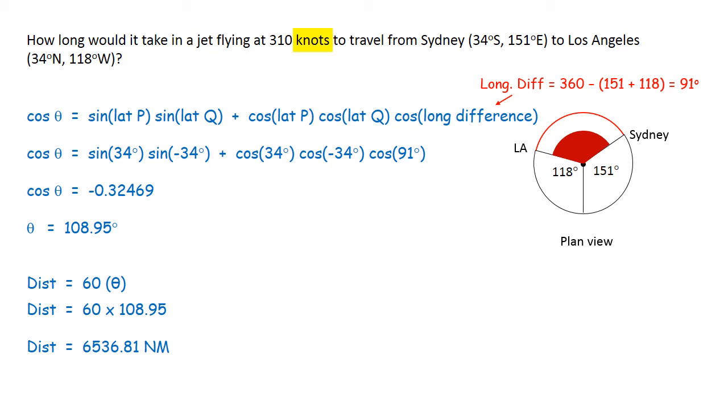Now time equals distance divided by speed. The distance was 6536 nautical miles divided by the speed 310 knots.